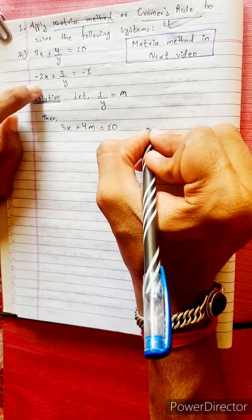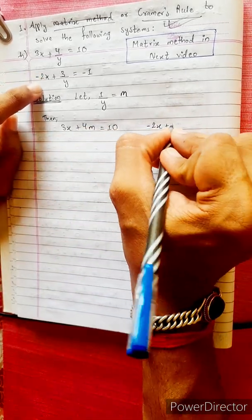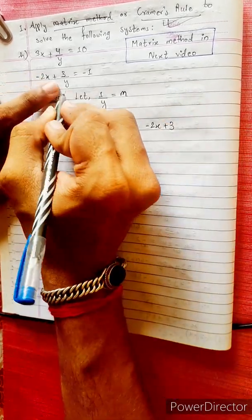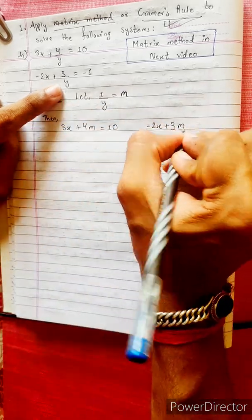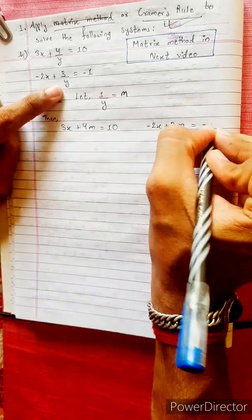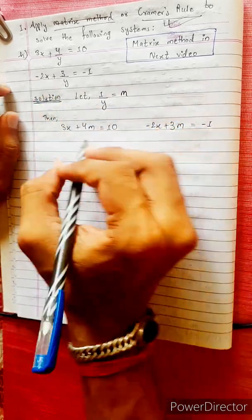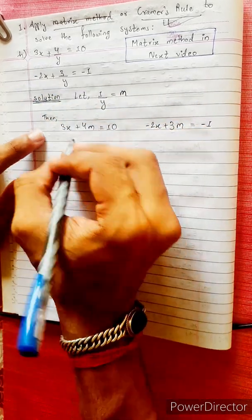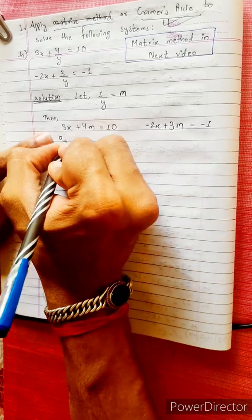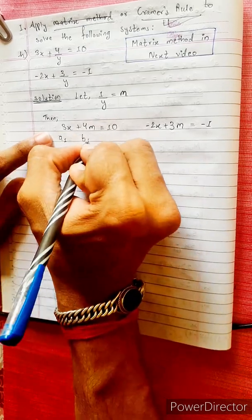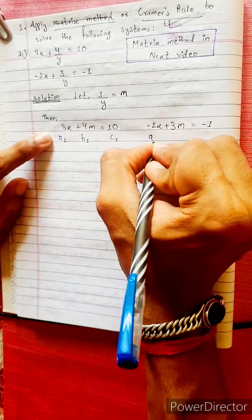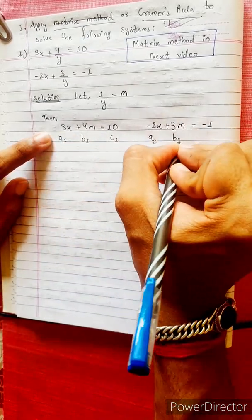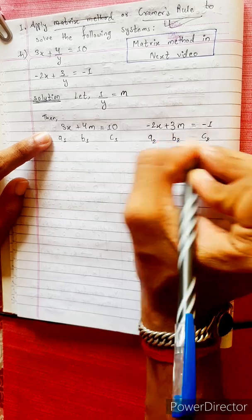And we will use 2x plus 3 into 1 by y, that is 3m, equals to minus 1. This is the second equation. Now compare a1, b1, c1 and a2, b2, c2.